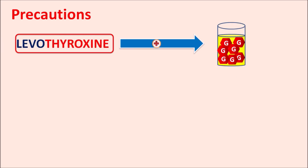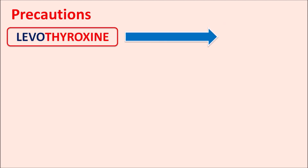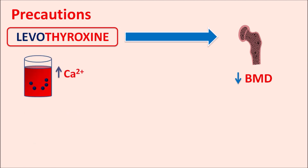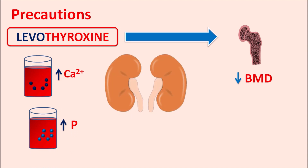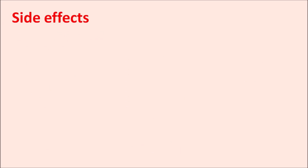Levothyroxine can also increase glucose levels, raising the risk of diabetes mellitus. It can also affect the bones by reducing bone mineral density, which is seen as increased serum calcium and phosphate levels with increased renal excretion of these minerals. Patients who already have reduced bone mineral density should be given levothyroxine with caution.